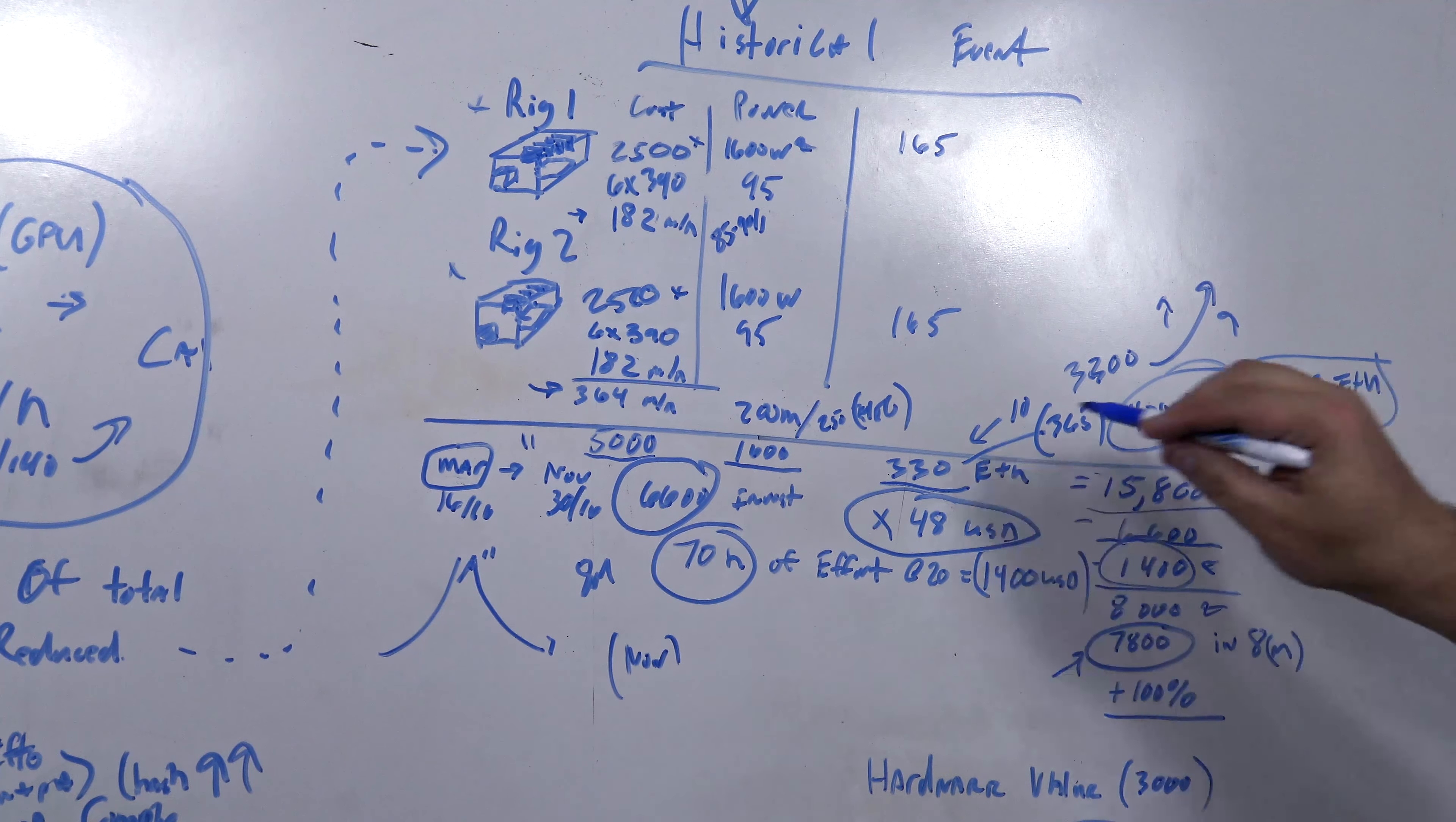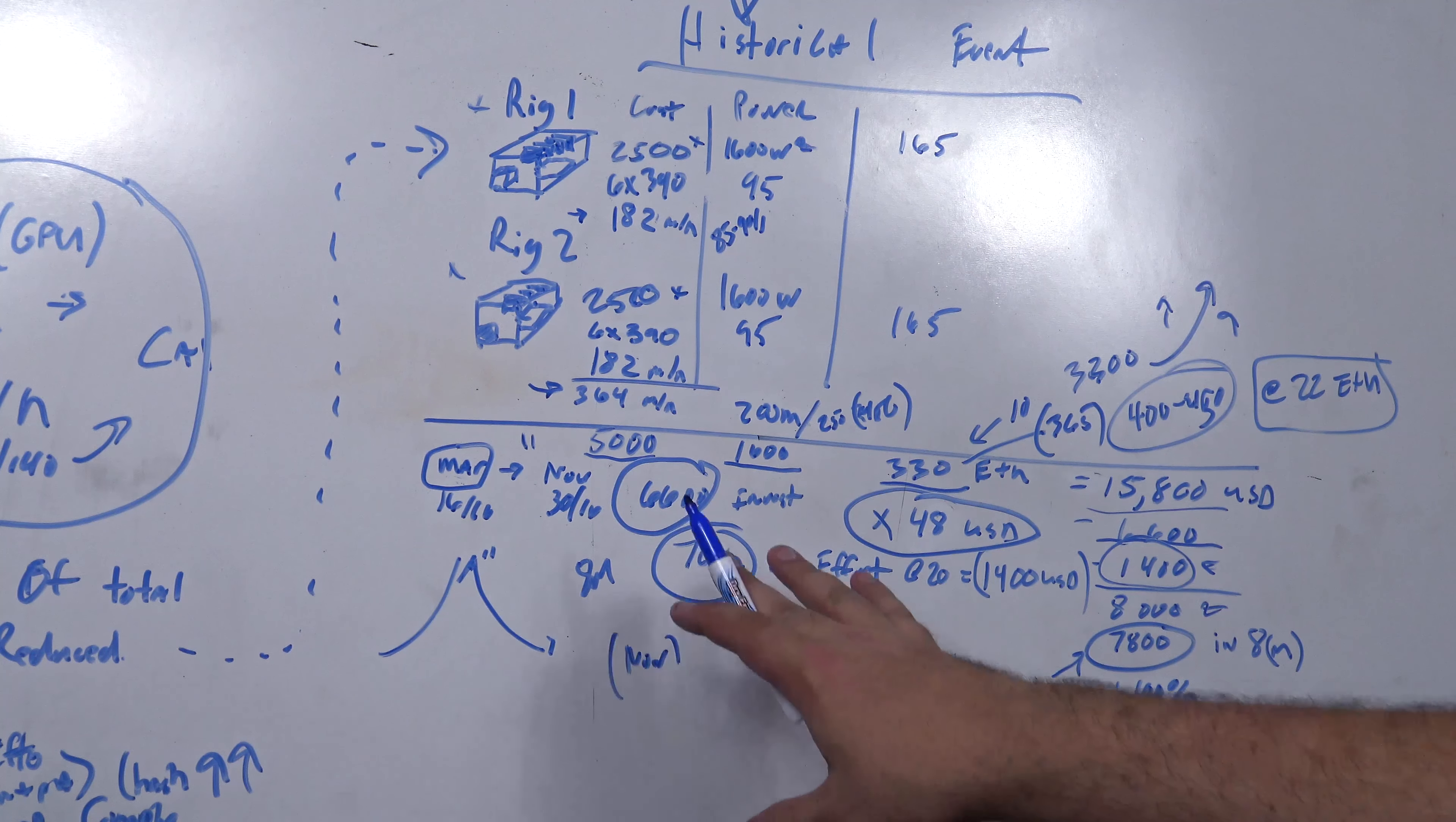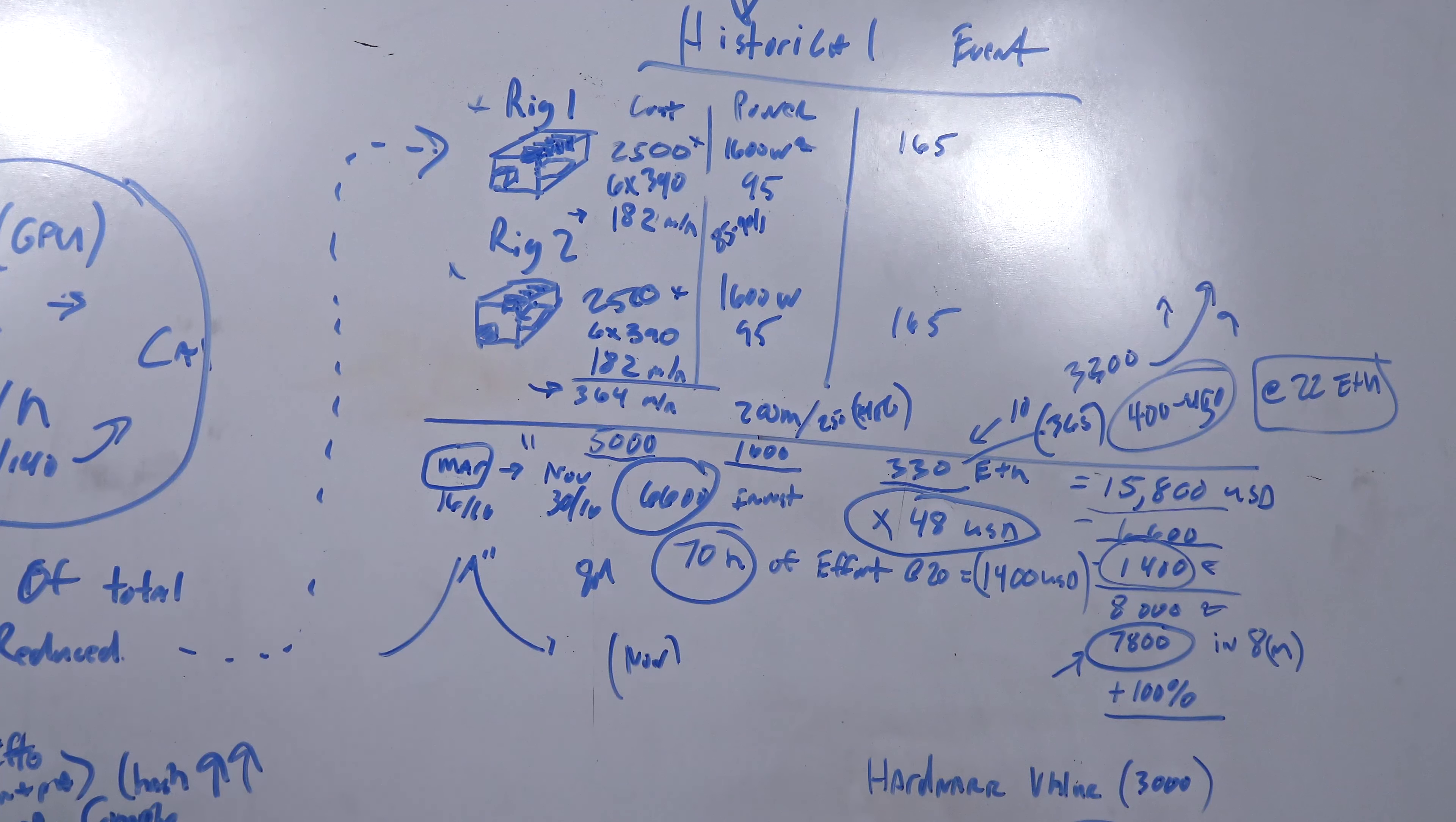And it would have been profitable in that eight months, plus you have your hardware recoup cost. You run it for eight months, you break it up, you sell it on eBay for the going prices, get about $3,000 back out of it, or maybe a little less, $2,500, somewhere around there. So that puts you right at a total reinvestment after you sell the equipment.